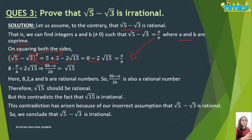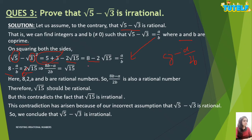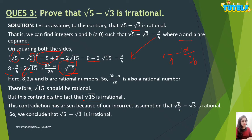Take A upon B squared to the other side to get 8 minus A squared upon B squared equals 2 root 15. Taking LCM: 8B squared minus A squared upon B squared equals 2 root 15. Dividing both sides by 2 gives 8B squared minus A squared upon 2B squared equals root 15. Be careful — first take the LCM, then divide by 2; do not write 8 minus A upon 2B as that is wrong. Since 8, A, B and 2 are rational numbers, the left side is rational, so root 15 should be rational. But this contradicts the fact that root 15 is irrational. Therefore root 5 minus root 3 is irrational.